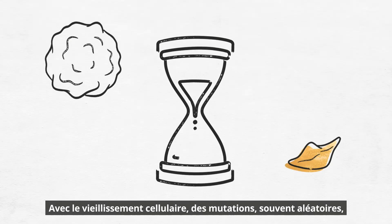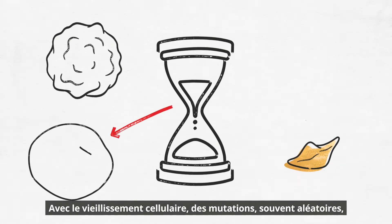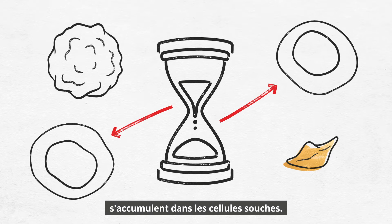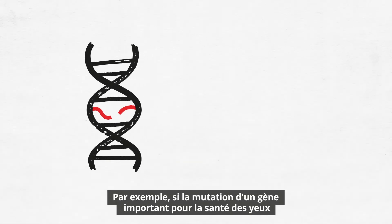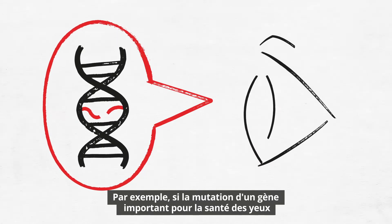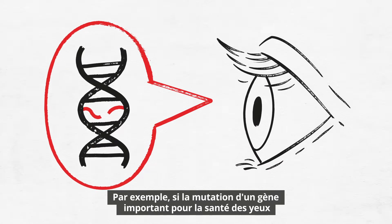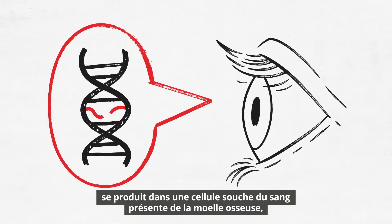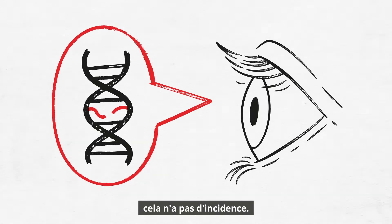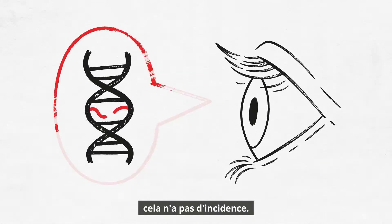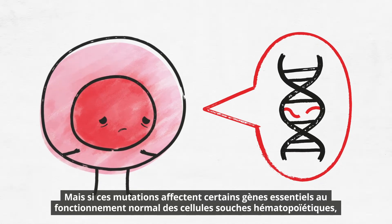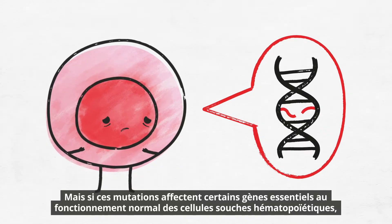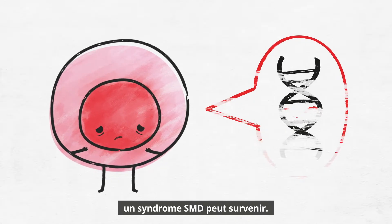With ageing, mutations accumulate in stem cells, mostly by random chance. Most of these mutations are of no consequence. For example, if a mutation in a gene important for eye health occurs in a blood stem cell in the bone marrow, nothing will happen. But if these mutations affect certain genes critical for normal blood stem cell function, MDS can result.